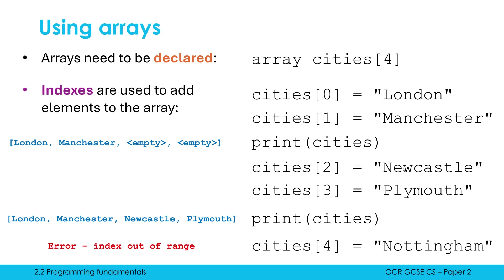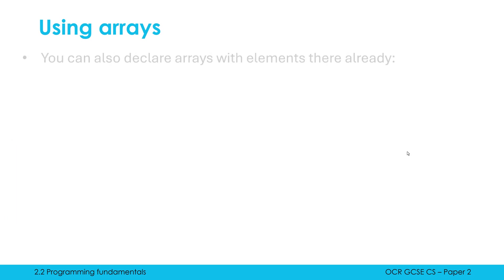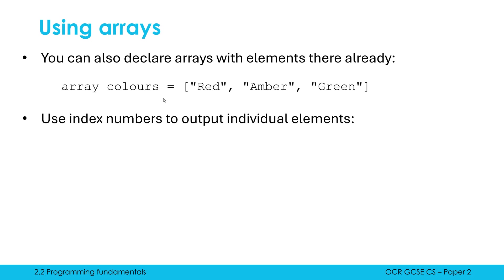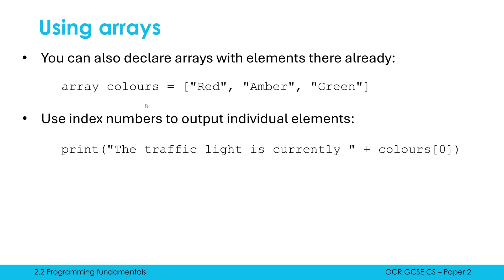This process of adding elements one by one is a little tedious, so you're allowed to combine this into one step by declaring arrays with elements already included. We can do something like declaring an array called colors with three elements all on one line — I'd suggest doing this in the exam. If you want to print one of these individual elements, use index numbers. For example, to print 'the traffic light is currently red', red is at index zero, amber at index one, green at index two — so print colors[0] concatenated with a string gives us the traffic light is currently red.